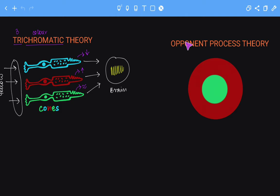This theory, the opponent process theory, states that the ability of humans to perceive colors is controlled by receptor complexes. This is one receptor complex that I have drawn over here.